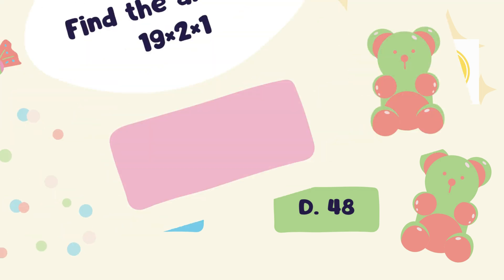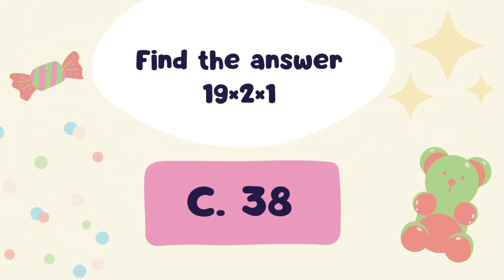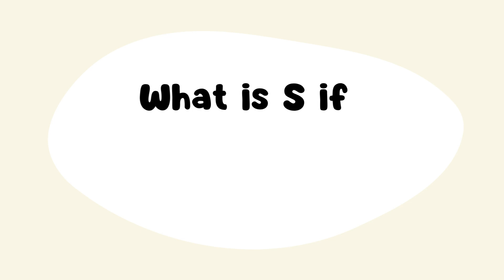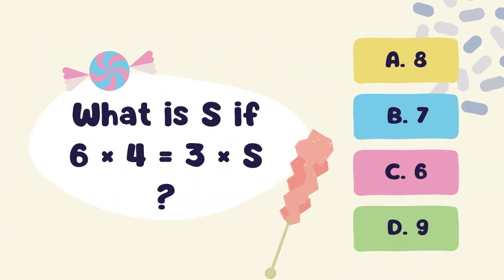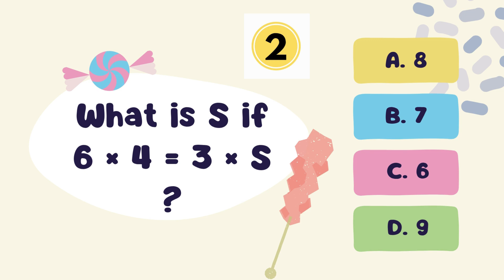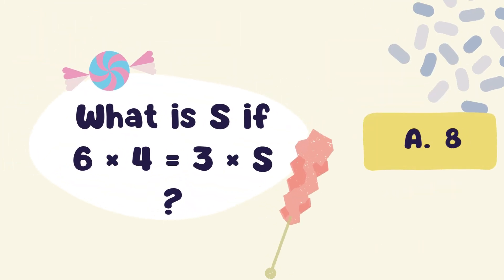Right answer: Option C. 38. Next question: What is S if 6 multiply 4 is equal to 3 multiply S? Correct answer: Option A. 8.